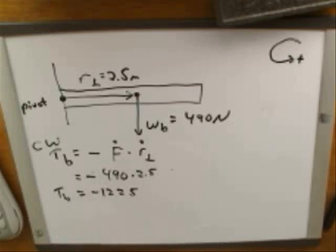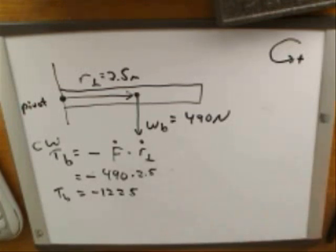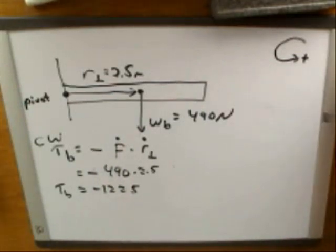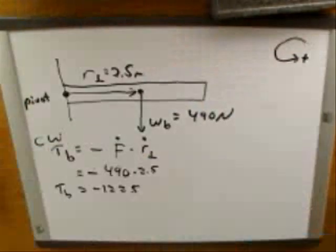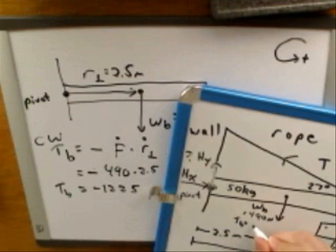So using the steps, we were not given any angle for the weight of the boom. When we start doing the tension, we might use the left-hand approach because for the tension we were given an angle. Now actually in this case it really doesn't make much difference whether you use the left or the right-hand approach, because R and r-perpendicular are the same. If you draw to the line of the force, that's the same as drawing to the point of application. So the torque of the beam is negative 1225 Newton meters. So let me write that down.